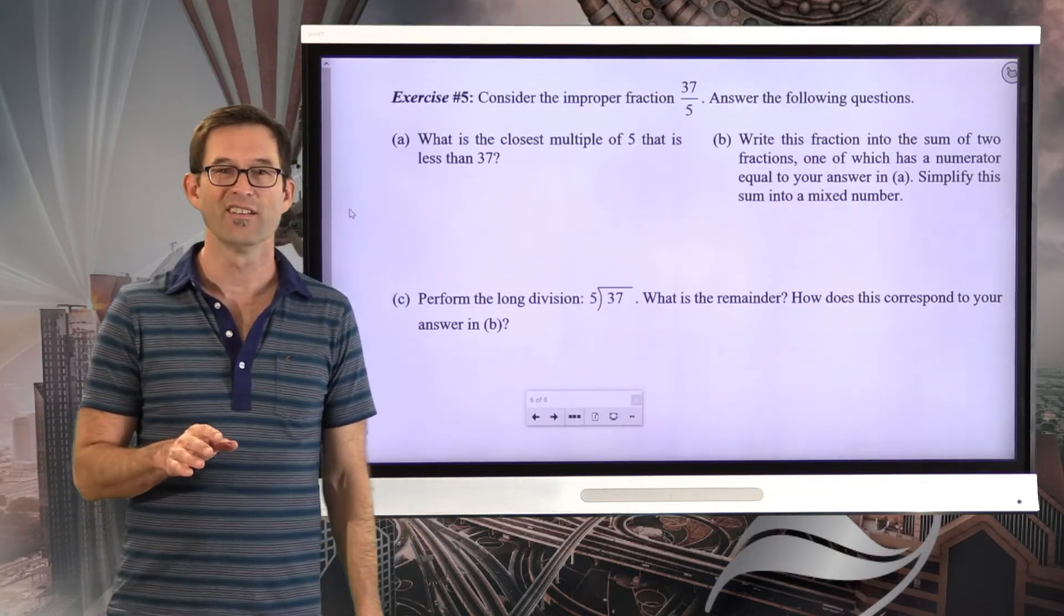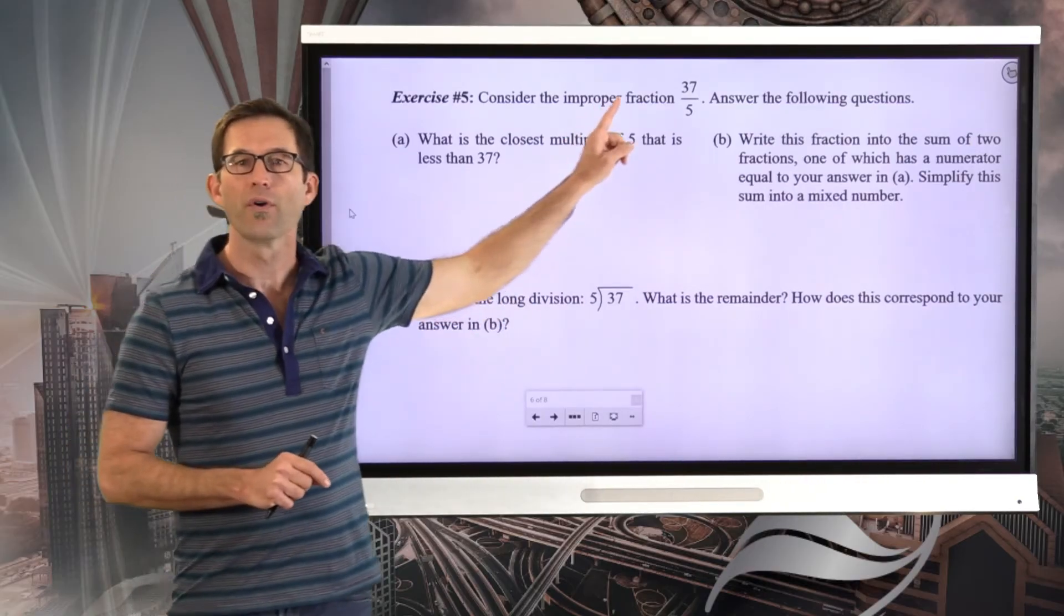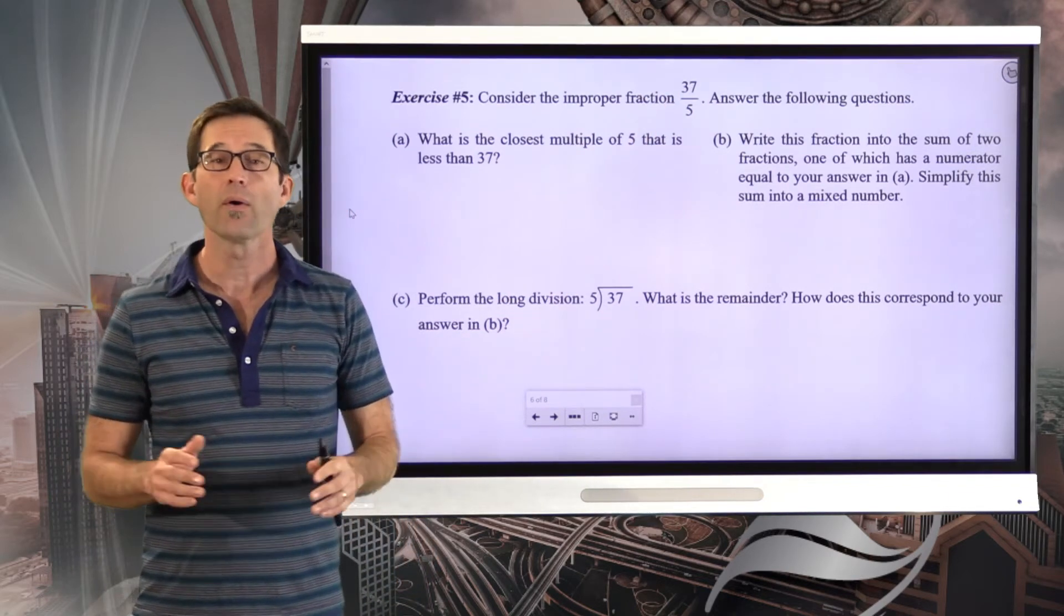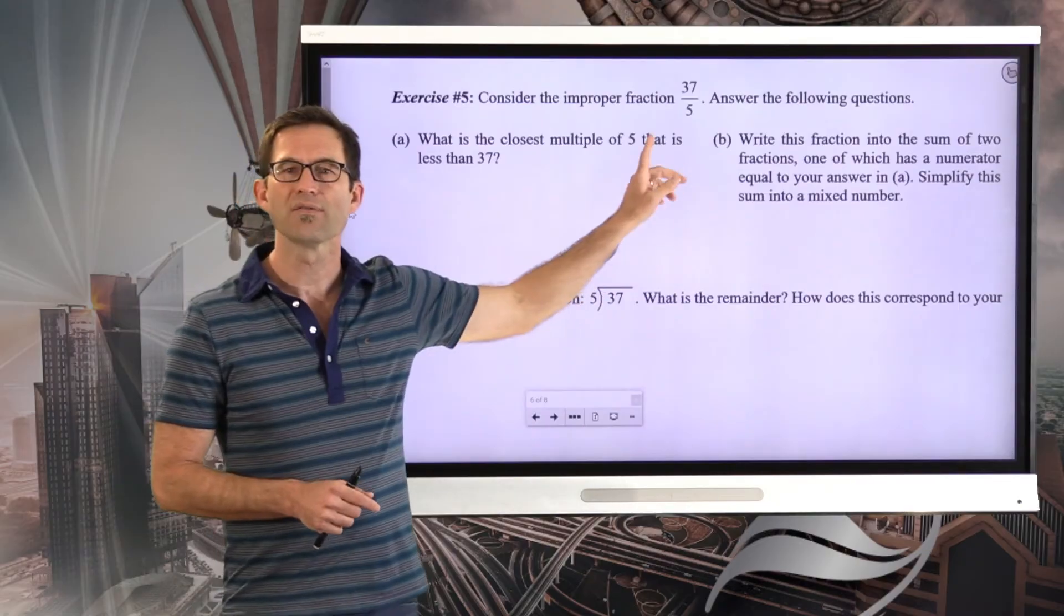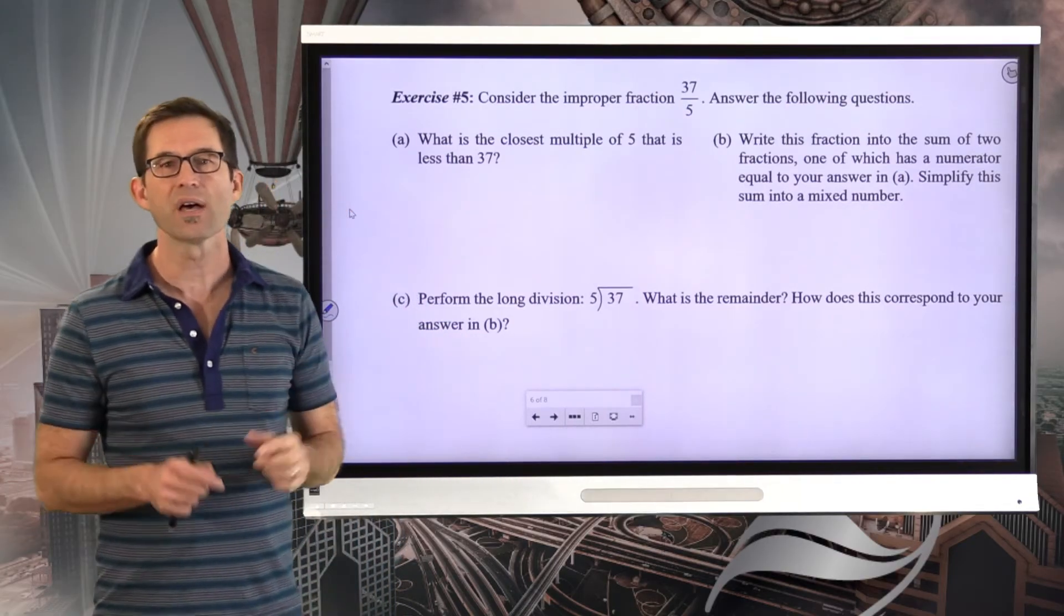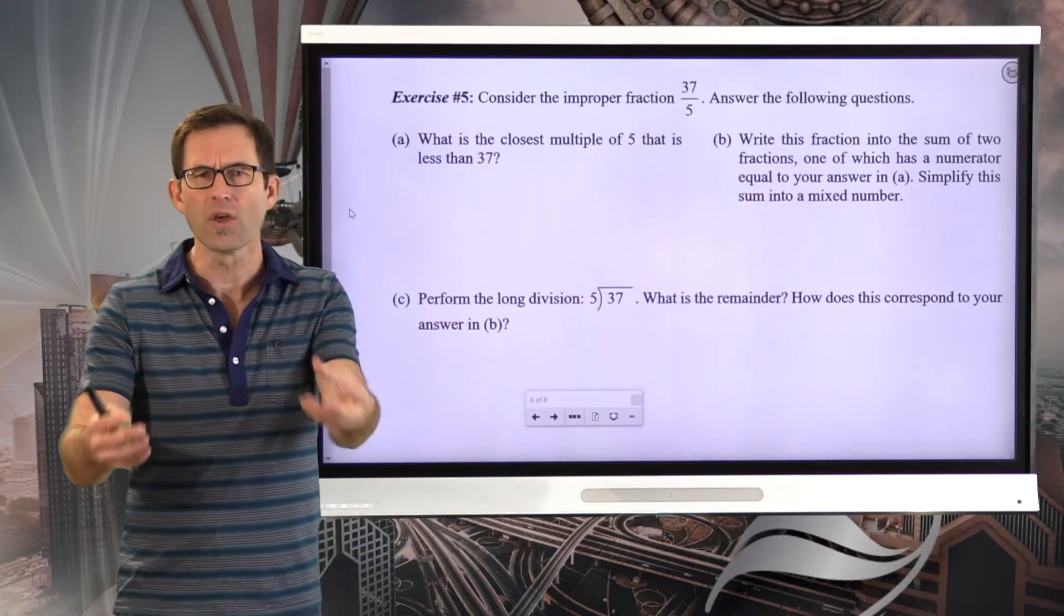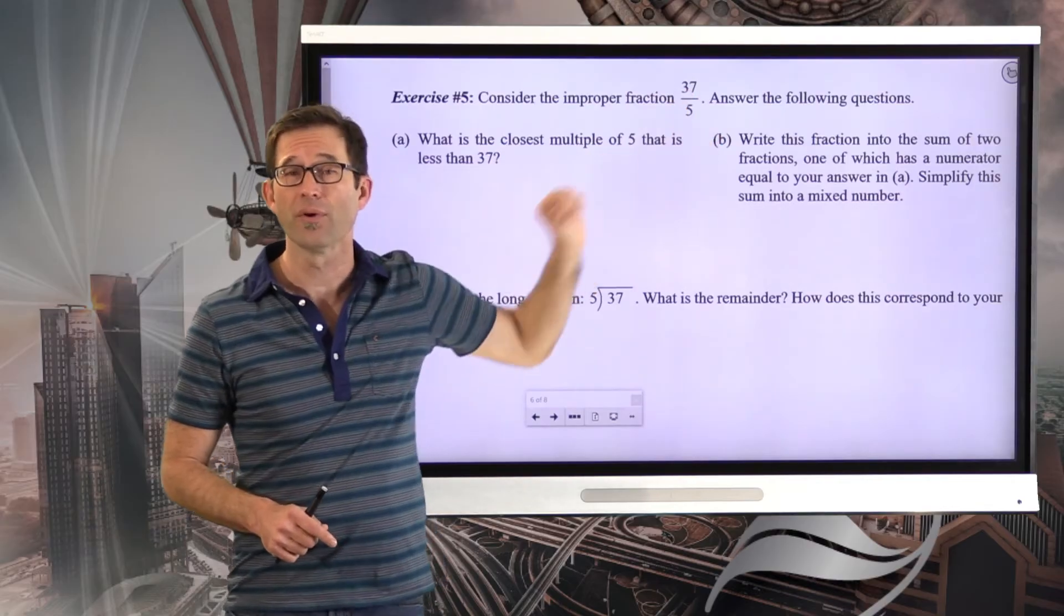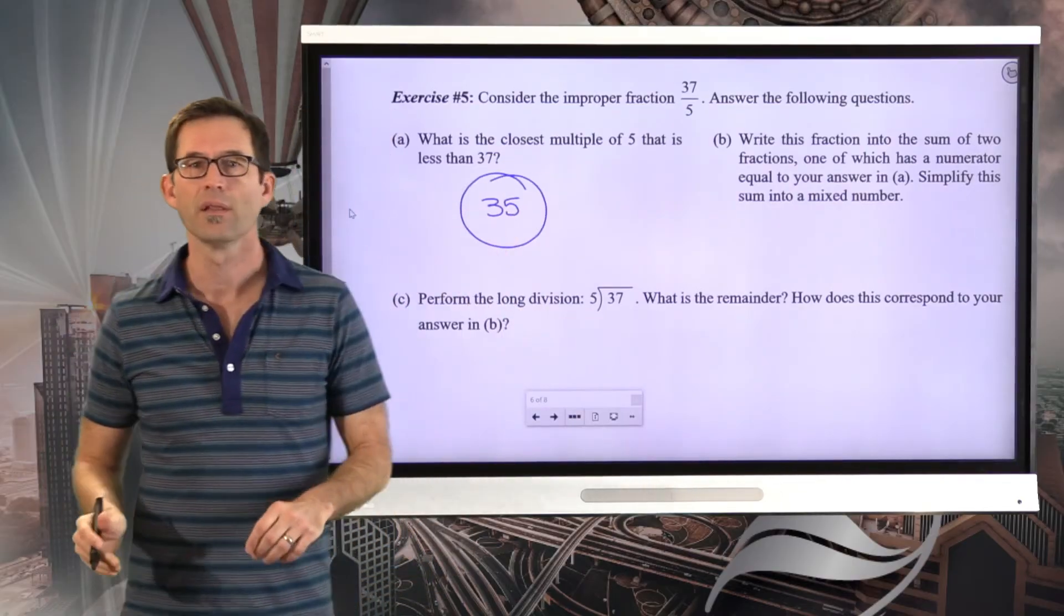All right. Let's talk about improper fractions. The fractions are improper when their numerator is larger than their denominator. In the last exercise, we saw each one turned out to be nice whole numbers. But what happens when we have something like this, where 37 is not nicely divisible by 5? Exercise 5. Consider the improper fraction 37 fifths. Answer the following questions. Letter A. What is the closest multiple of 5 that is less than 37? So a multiple of 5 is a number that 5 nicely goes into. Well, the closest multiple of 5 to 37, that's still smaller than it, is 35.